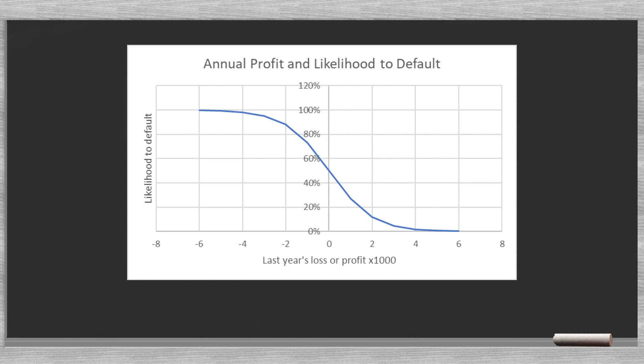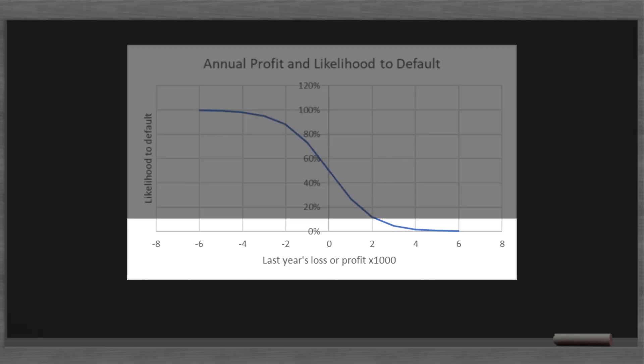Now we take this a step further and move to the logistic regression. The first concept we need to understand is the S-curve or logistic function. We use this S-curve to transform a continuous input to a binary output. In the graph we see the S-curve or logistic function.